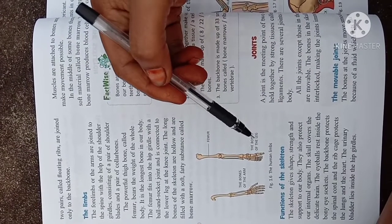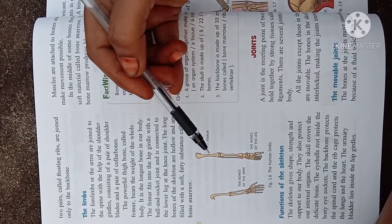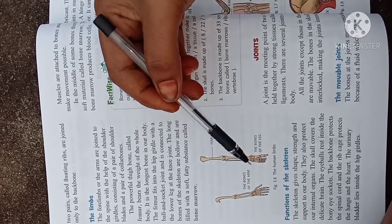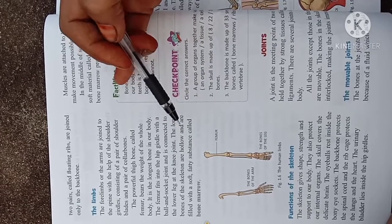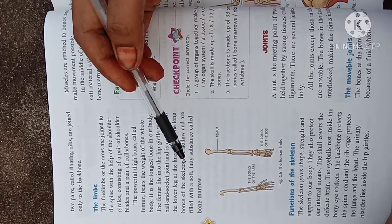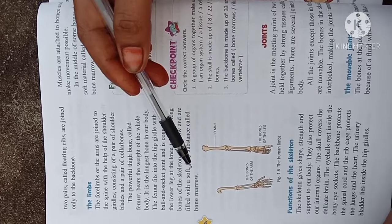The bones of the arms. The long bones of the skeleton are hollow and are filled with a soft and fatty substance called bone marrow.